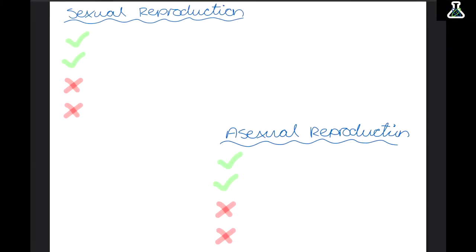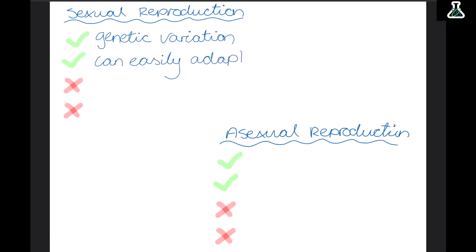There are two types of reproduction: sexual and asexual. Sexual reproduction is good because it means the species will have genetic variation, which means the organism can easily adapt to changes in the environment. By having genetic variation, there is more chance that the organism will randomly have a mutation that can help them survive in different situations. However, sexual reproduction takes a long time.